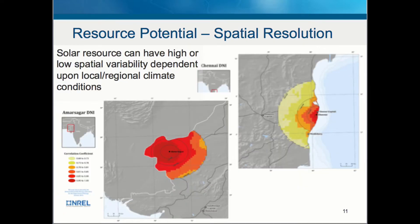Solar resource may have a high degree of spatial variability or it may not — it depends on local and regional climate conditions. In the two images displayed here, the location on the right generally has a high degree of variability which becomes less apparent further away from the epicenter, while the image on the left generally has similar resource across the area of focus.